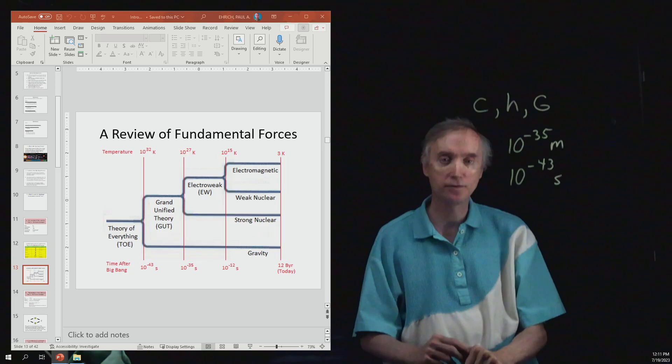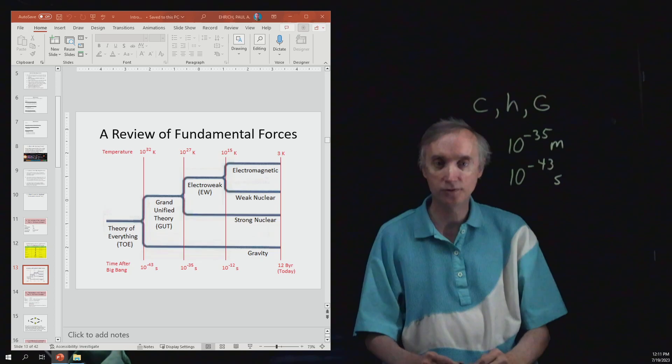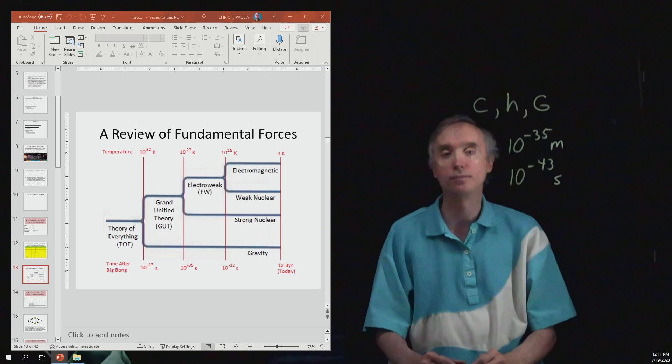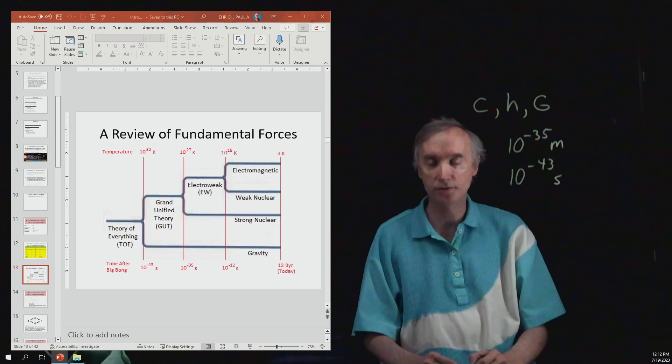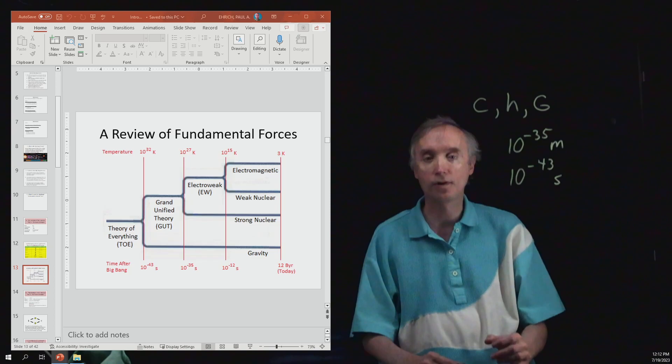Because if we go to this chart here, this is a review of how the fundamental forces unify. The weak nuclear force and the electromagnetic force go together first to make the electroweak force. And then the electroweak force combines with the strong nuclear force to make the grand unified theory or GUT. And then finally, the grand unified theory combines with gravity at still higher temperatures to make ToE, the theory of everything.